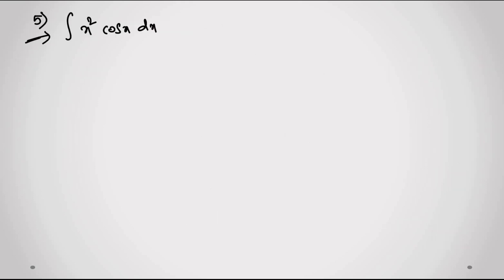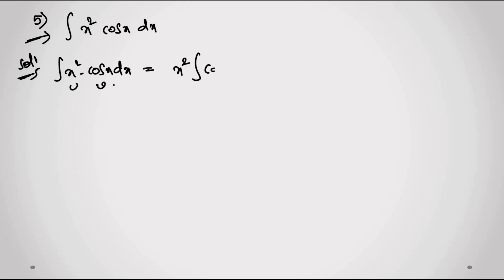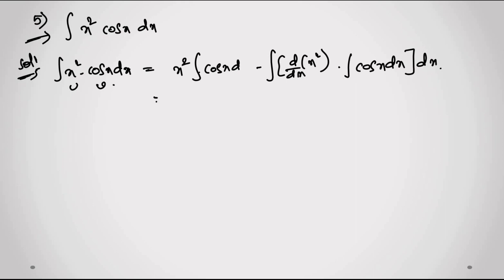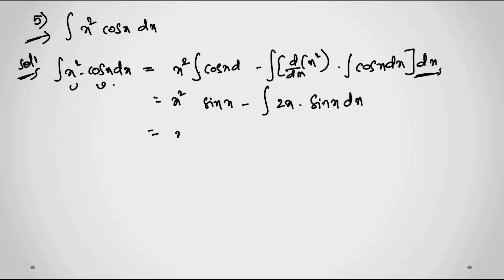Now question 5 — very very important. Integral of x²·cos(x) dx. I take x² as u and cos(x) as v. Applying integration by parts: x²·sin(x) minus integral of 2x·sin(x) dx. So it becomes x²·sin(x) minus 2·integral of x·sin(x) dx.